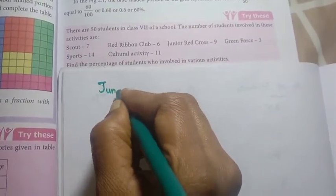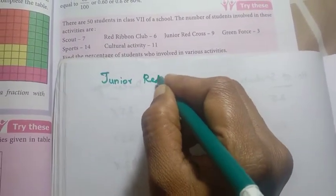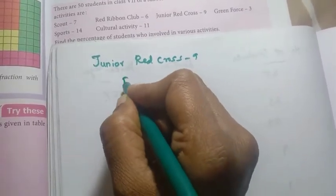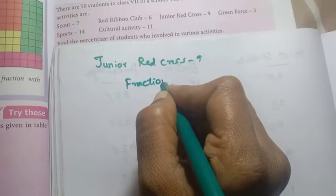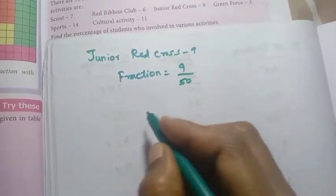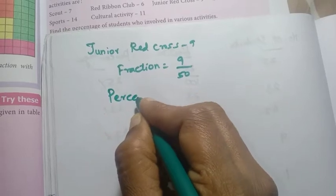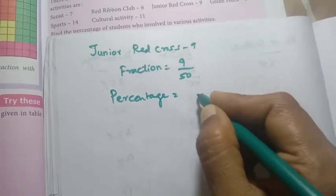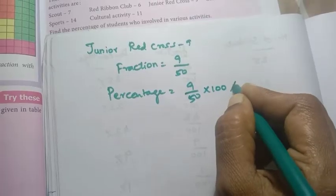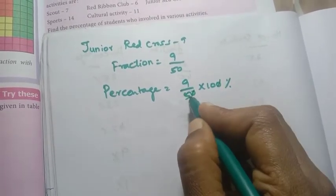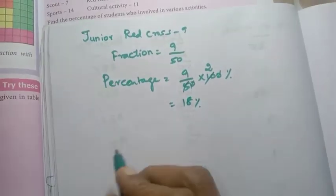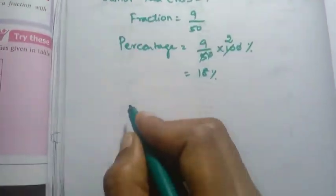Junior Red Cross: total students 50, students in junior cross are 9. Percentage = 9 by 50 into 100. Cancel zeros: 5 twos are 10, 9 twos are 18 — so 18 percentage.